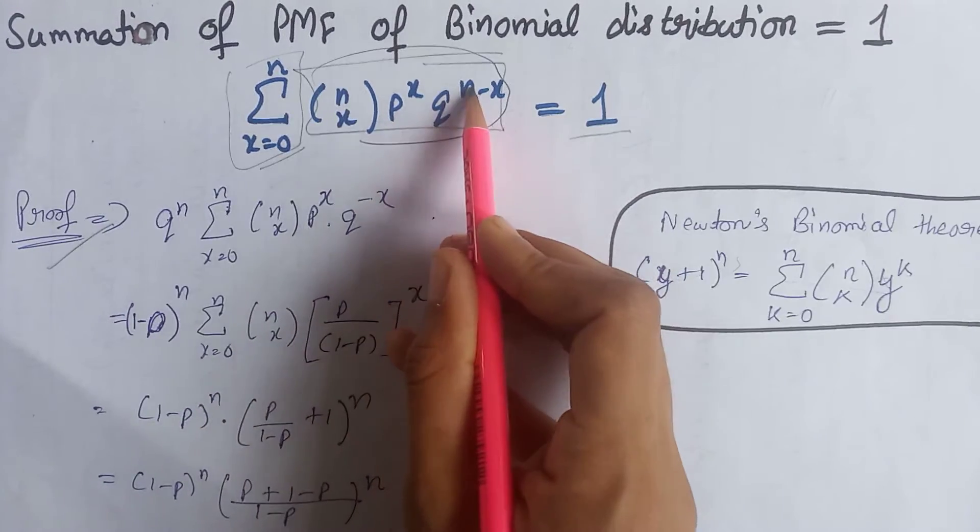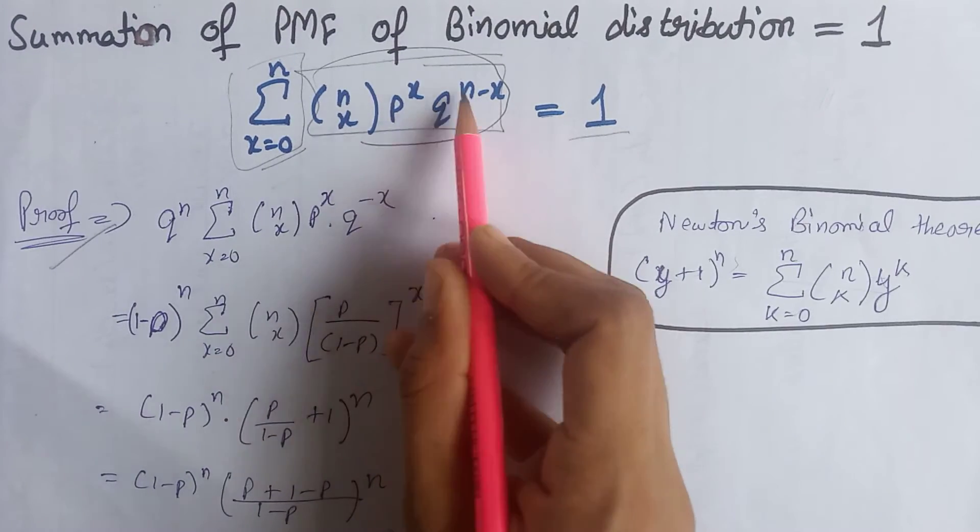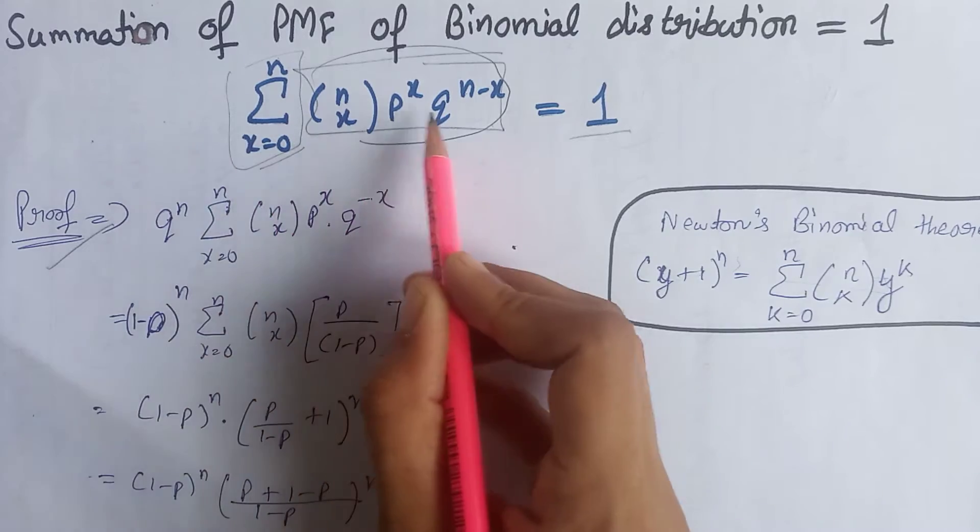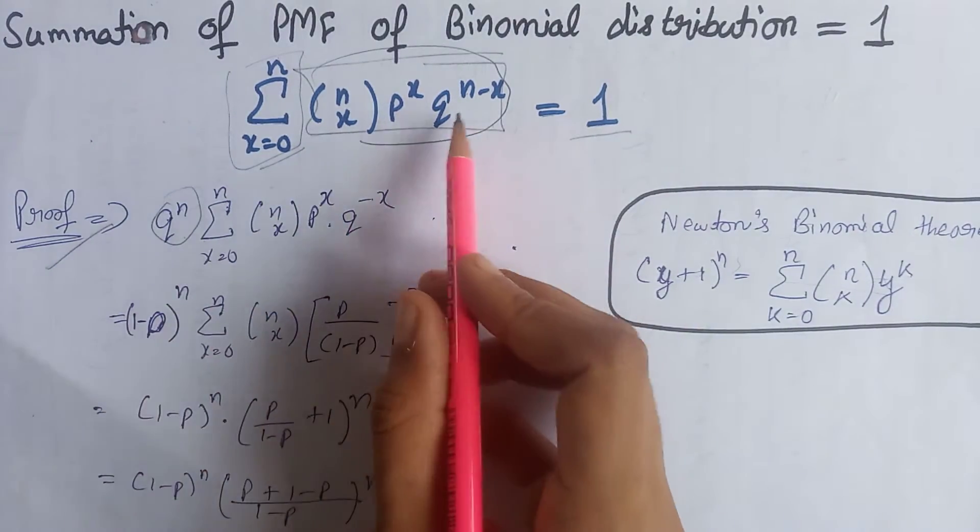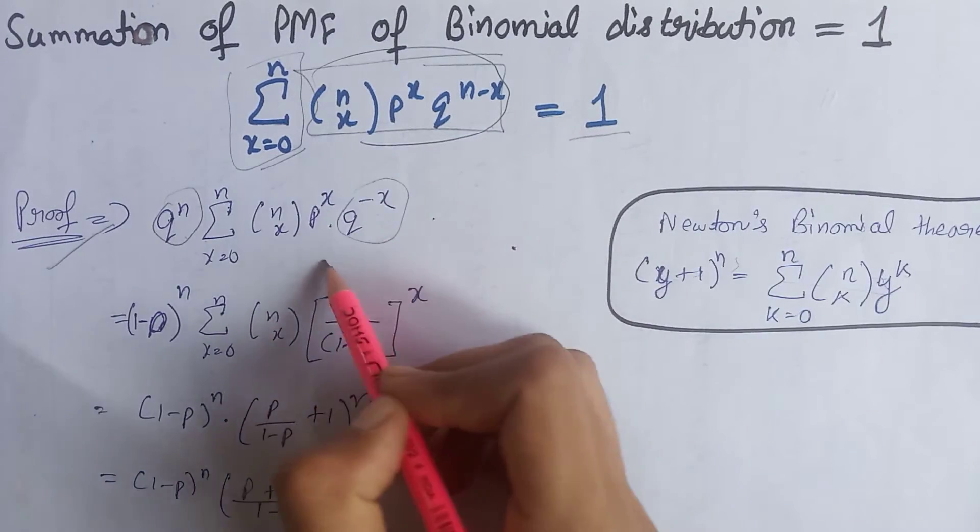Firstly, we know that q raised to power n is a constant term because it is independent of x. So that's why we take q raised to power n outside the summation and take q raised to power minus x inside the summation.